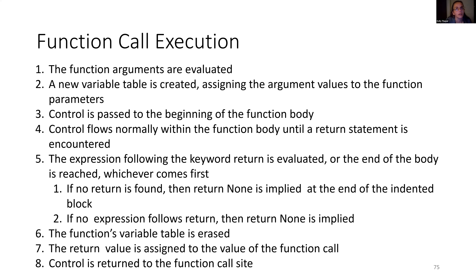Is there something in the box? Is there somebody to receive it? When we hit the return, it's concerned with sending that box out. The expression following the keyword return is evaluated, or the end of the body is reached — whichever comes first. Either way it will be processed as a return. If no return is explicitly found, then return None is implied at the end of the indented block. If no expression follows return, then return None will be implied. The function's variable table is erased — destroyed forever — and all local variables are gone. The only thing that survives is whatever gets put into that Amazon box. You could also have had a change in the environment, like drawing a picture or printing something to the screen, but that information is still lost to the program when the return is hit.